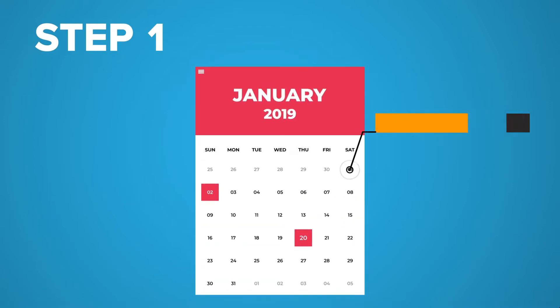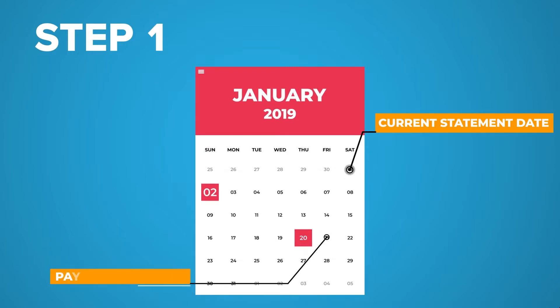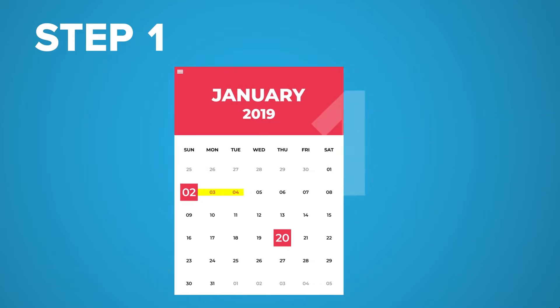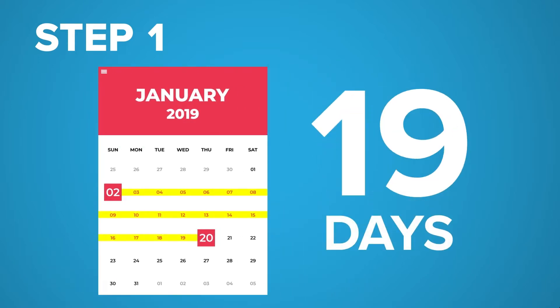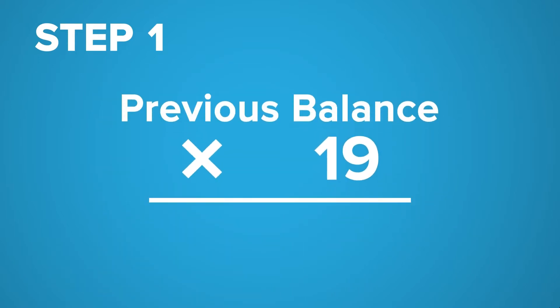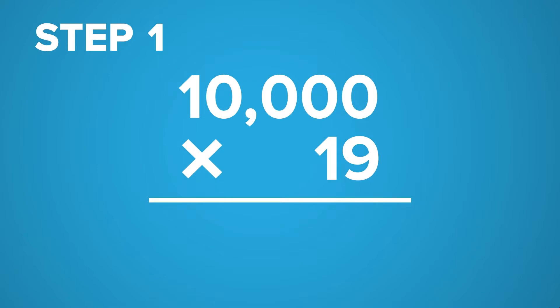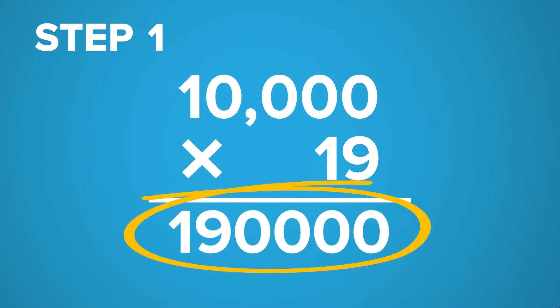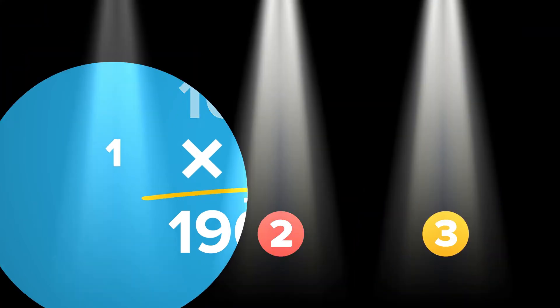Add the number of days after the current statement date — that's January 2 to the day before the payment due date, which is January 20. That equals 19 days. Multiply the previous balance with the number of days that the amount is outstanding or unchanged. That's 10,000 pesos times 19 days, which equals 190,000. We'll get back to this answer later.